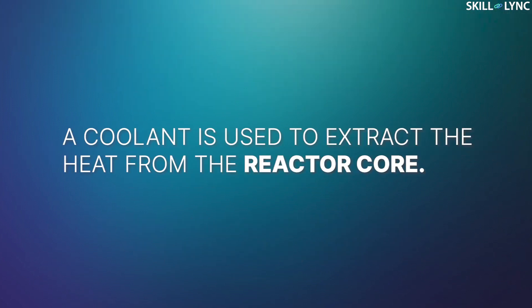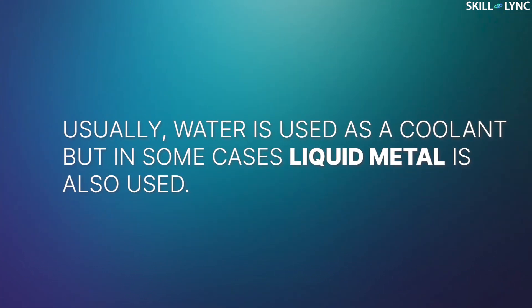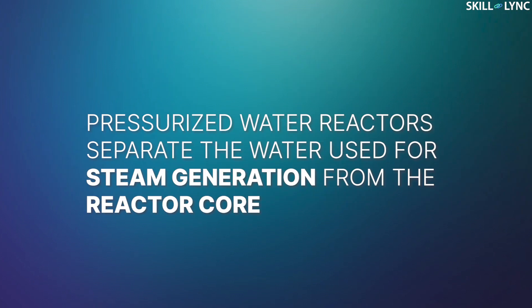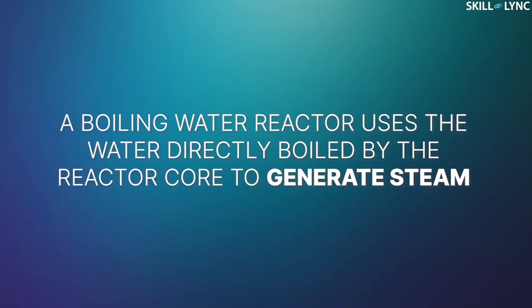The heat generated in the reactor needs to be extracted from the reactor core in order to use it for the generation of electricity. This is accomplished by the use of a coolant. Depending on the type of the reactor, the coolant can be normal water, heavy water, or some liquid metal like molten salt. The coolant is then used to carry away the heat to generate steam. The water used for the generation of steam can be physically separated from the reactor core, as in the case of a pressurized water reactor, or it can also be directly boiled by the reactor core, as in the case of a boiling water reactor.